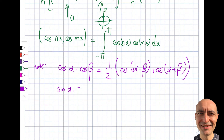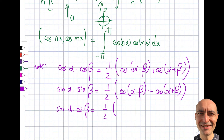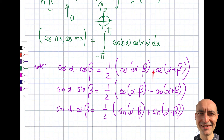There are two more identities. Sine of alpha times sine of beta equals one-half times cosine of alpha minus beta minus cosine of alpha plus beta — note the minus sign, not plus. And sine of alpha times cosine of beta equals one-half times sine of alpha plus beta. The pattern: cosine times cosine or sine times sine always gives cosine; sine times cosine gives sine. Since exams are closed book, students often confuse the signs — memorize these, you will need them.